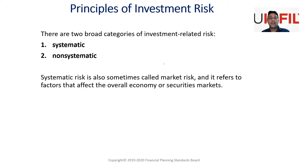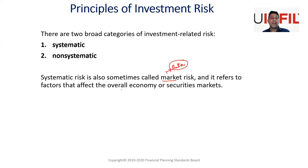Systematic risk is also sometimes called market risk. Market risk is essentially beta. So systematic risk in investments is represented by beta, and it refers to factors that affect the overall economy or securities markets.